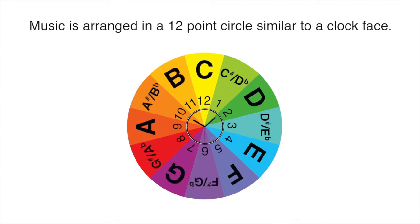Two or more notes played together is called a chord. A triad is a chord of three notes. A chord can start on any note of the chromatic scale, and there is a specific interval pattern for each chord quality.